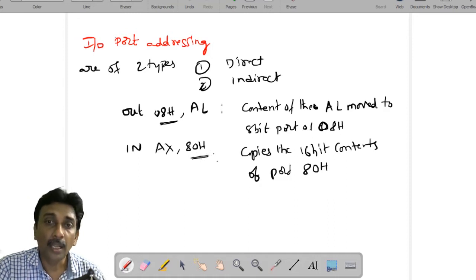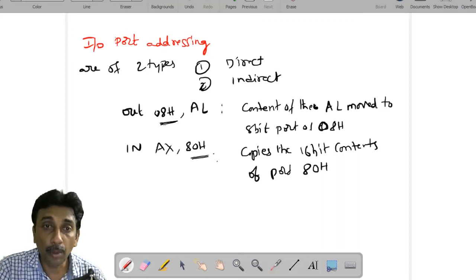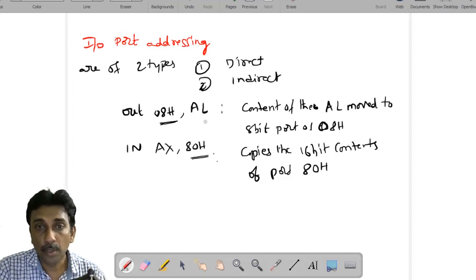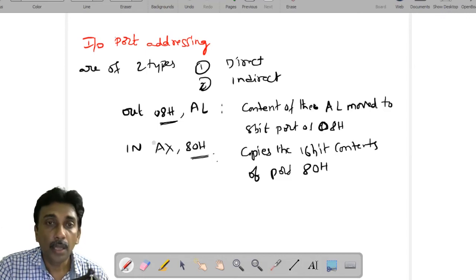So the copies the 16-bit contents of the port ATH. The port ATH has some data, that data will be copied to the 16-bit. So from external, it's coming inside the processor, so that it is IN. OUT means that from the processor it is going out via the port. AL is moved to 8-bit port - from the 8-bit port it sends out. As well as IN means that from the port it's coming to the AX register.